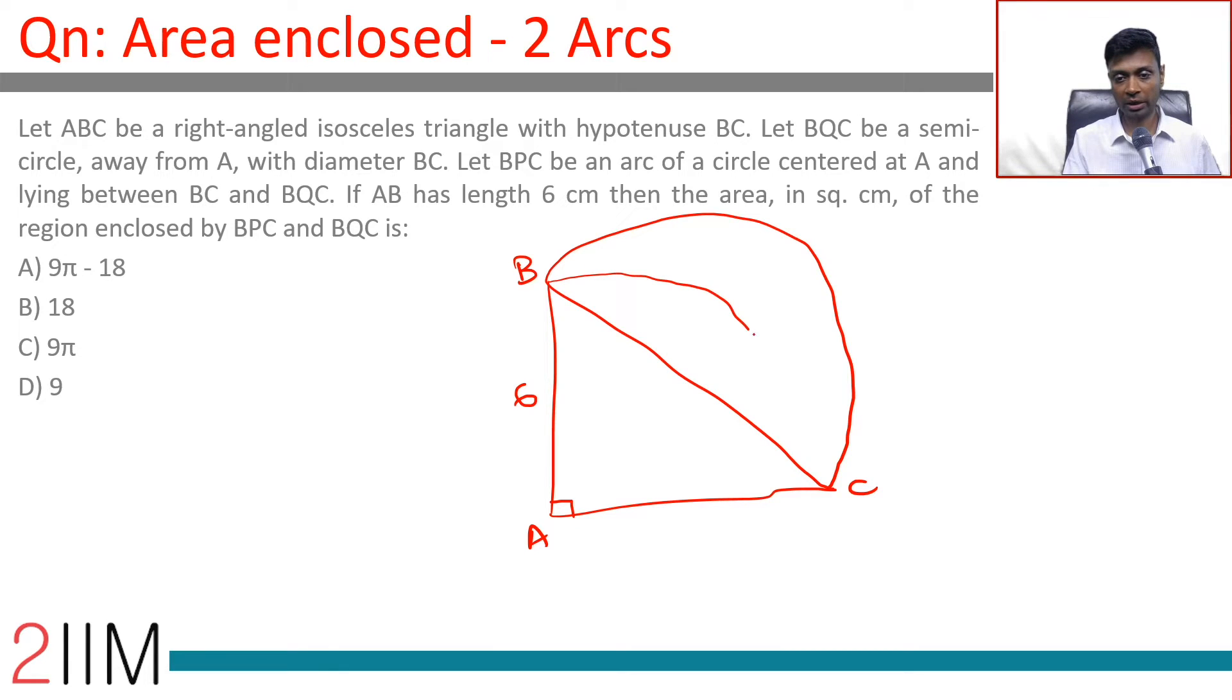So it is an arc like this. Wonderful. If AB has length 6, the area in square centimeters of the region enclosed between BPC and BQC. We are looking at this. Again, it is a standard question, but we will solve this through to completion anyway. How do we do this?